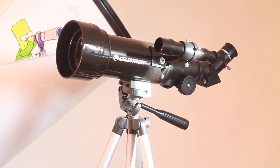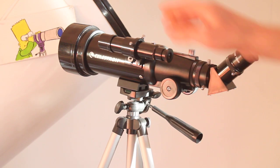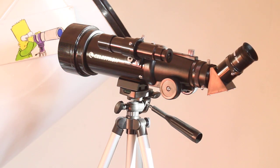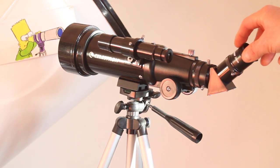So moving on to the finderscope, it comes with an inverted image 5x24, very basic optics, and so you might want to upgrade that to a red dot finder. But it's not my choice of one thing that I would upgrade, mainly because with this eyepiece - this is the 20mm which gives 40x magnification.